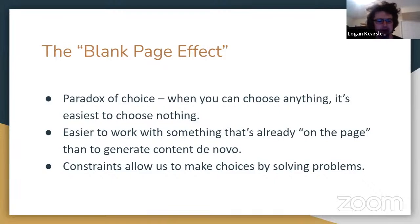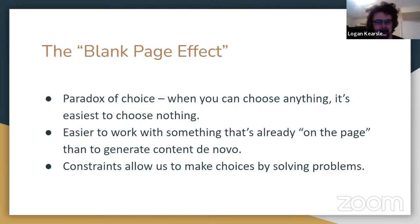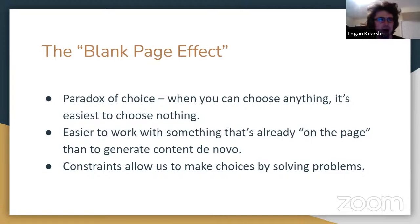There are two interacting ideas: the blank page effect and the paradox of choice. If you have too many choices in front of you, that sounds like a good thing — it's great to be able to make choices — except it turns out to be really hard. If you have too many choices, most people end up shutting down and saying, "I don't know what to do." It's a lot easier to work with something that's already on the page than to just spew out artistic greatness from nothing. Actually having constraints allows us to make better art by engaging the parts of our brain that solve problems instead of having to generate stuff from nothing.